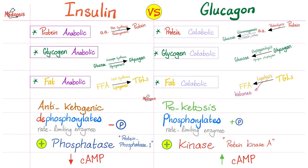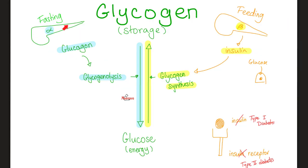Insulin is anti-ketogenic. Insulin promotes dephosphorylation — insulin stimulates phosphatases but inhibits kinases. Insulin decreases cyclic AMP. When you're fasting, this is glucagon land: it stimulates glycogenolysis, breaking down glycogen into glucose to use for energy. But when you're feeding, it's insulin land — glycogen synthesis: convert that glucose into glycogen and store it.